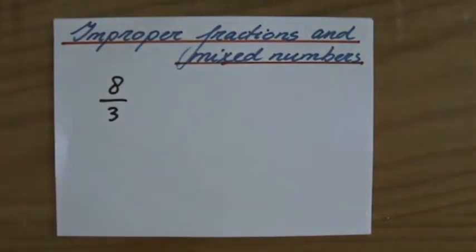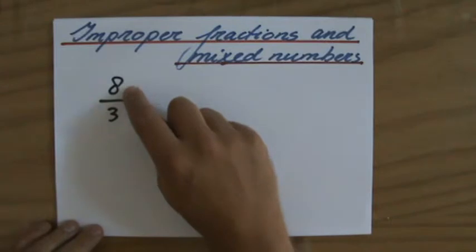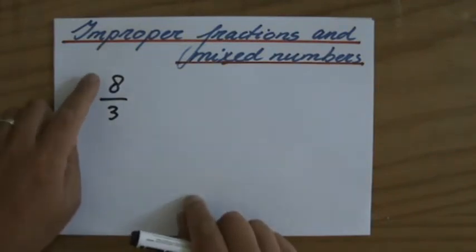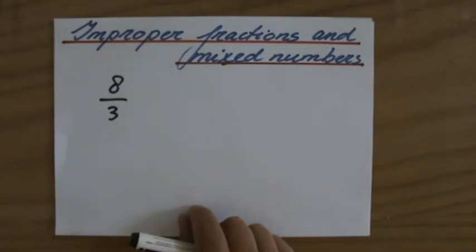It's an improper fraction because the numerator is larger than the denominator and sometimes we call improper fractions also top-heavy fractions. Top-heavy. The numerator is heavier and larger than the denominator.